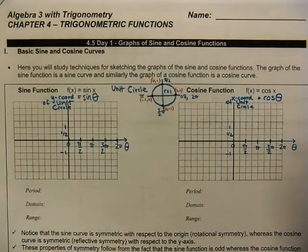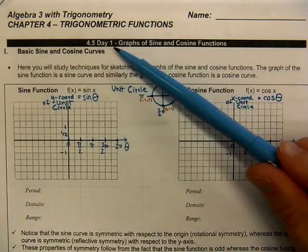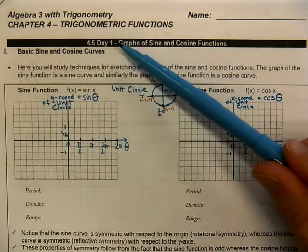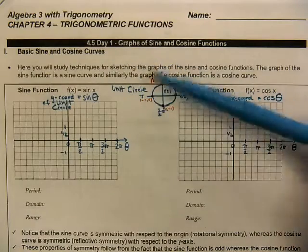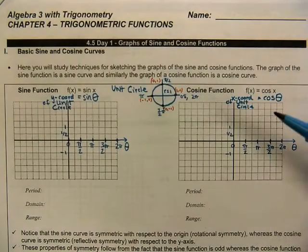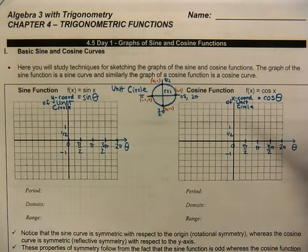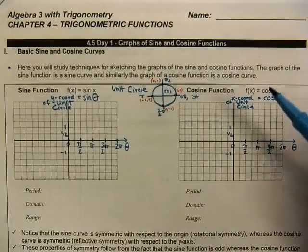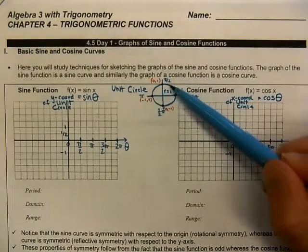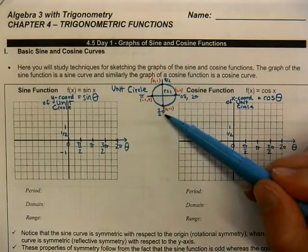Hey everyone, today we're looking at graphing our parent function for sine and cosine curves. This is 4.5 day 1. We're going to look at the parent function, and down below on this page you'll see more detail about graphing a wide variety of sine and cosine curves given a variety of transformations. Let's go through the basic shapes. I've already sketched out a little diagram of the unit circle, identifying those quadrant angles.